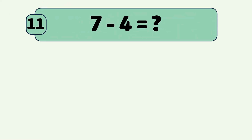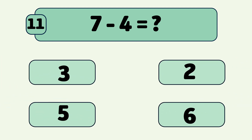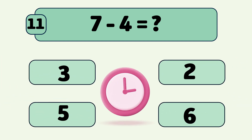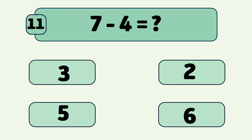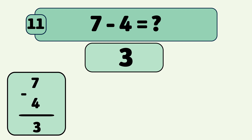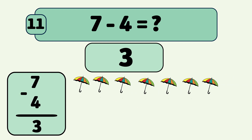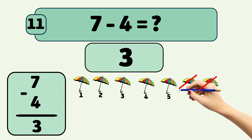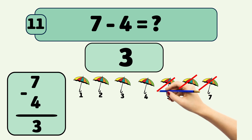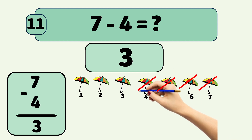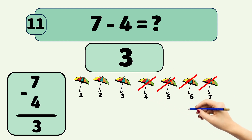What is seven minus four? The answer is three. We start with seven umbrellas and remove them one by one: seven, six, five, four. Now we have three umbrellas left.